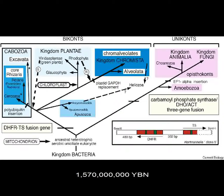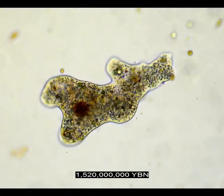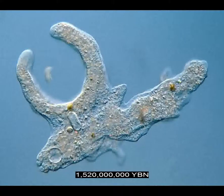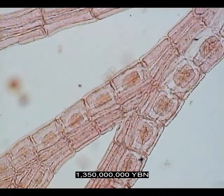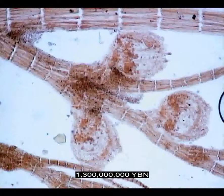Biconts lead to all chromalveolates, excavates, rhizaria, and plants. Uniconts lead to all amoebozoa, animals, and fungi. Protists amoebozoa — amoebas and slime molds — feed using pseudopods. Protists opisthokonts — ancestor of fungi, choanoflagellates, and animals. Mitochondria with flattened cristae. Filamentous multicellularity in eukaryotes evolves. Differentiation in multicellular eukaryotes: gamete or spore cells and somatic cells. Unlike gamete cells, somatic cells are asexual and non-fusing. Start of death by aging. Haplontic life cycle — eukaryote has multicellular haploid stage.